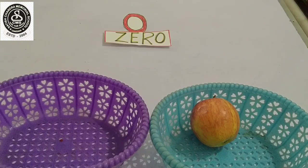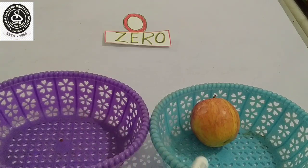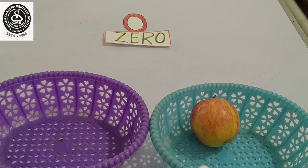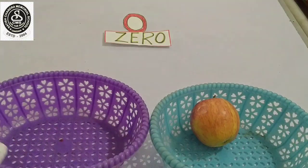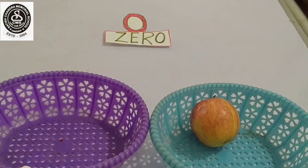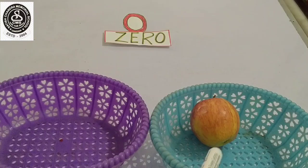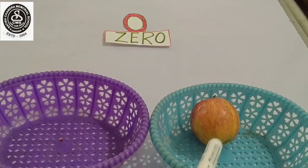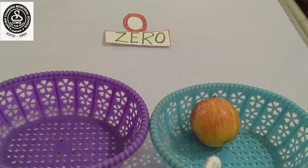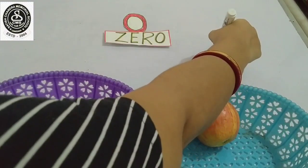Now everybody see, I have two baskets. How many baskets? Two baskets. In this basket nothing is there, right? And in another one I have an apple. How many apples are there? Yes, you are right. Number one apple. So I am writing here number one.